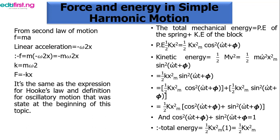There is energy transformation in simple harmonic motion. The total energy exerted by a spring equals the potential energy of the spring as it moves in and out or up and down, plus the kinetic energy of the block attached to the spring. That's how we get the total energy in simple harmonic motion.